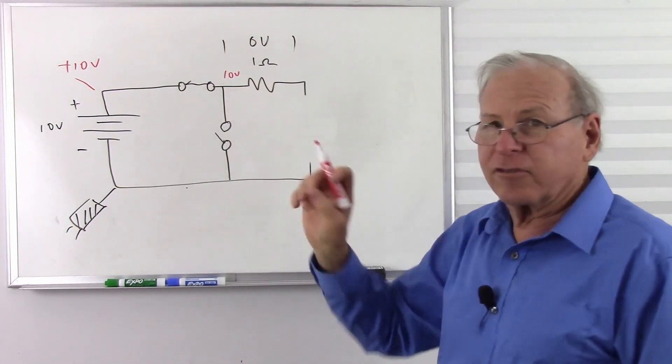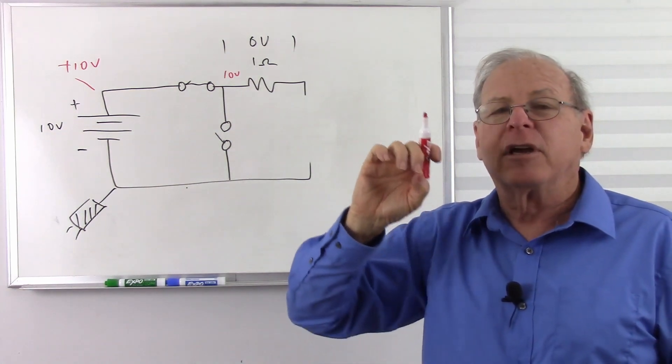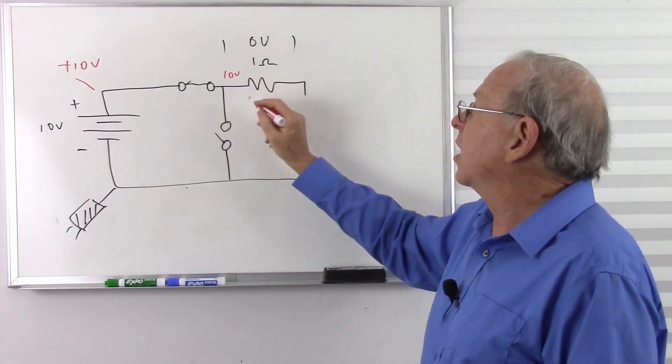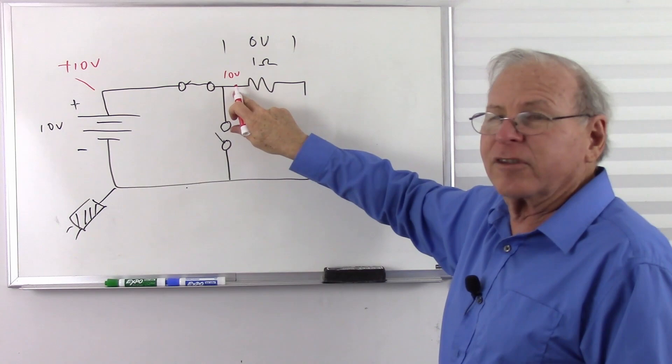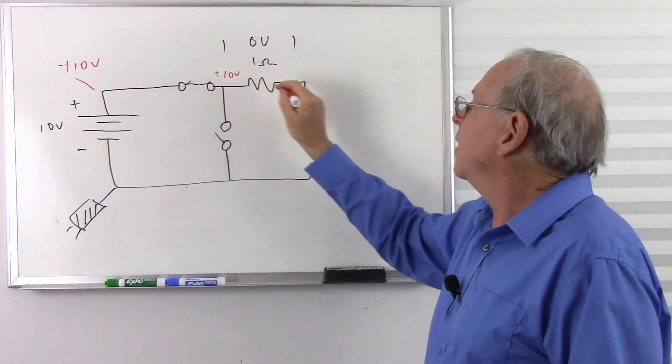When I say there's zero volts here, that's not the absence of voltage. It simply means there's no difference between one side and the other. So this voltage is the same as that voltage.